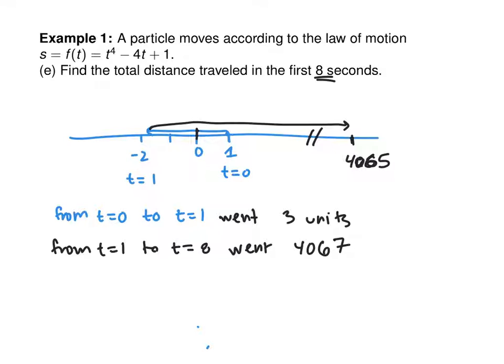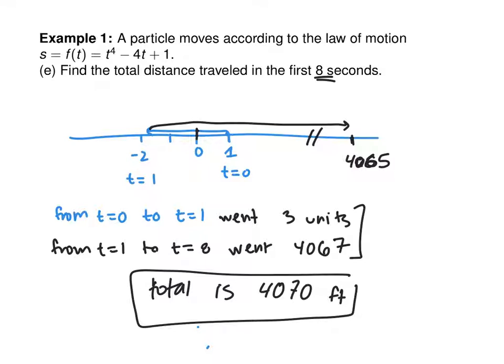The total distance traveled in the first eight seconds. We began at 1, went back to negative 2. That was time equals 0. This was time equaled 1. How many units from t equals 0 to t equals 1? Went 3 units. We care about 8 seconds. How would you figure out where this thing is at at 8 seconds? Plug in t equals 8. From t equals 1 to t equals 8, 4,065.